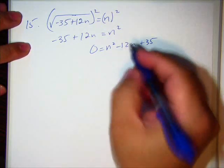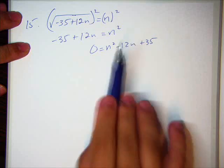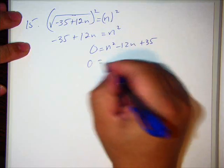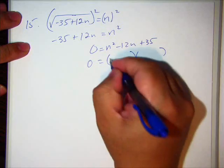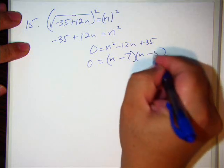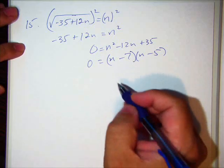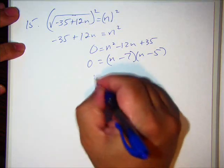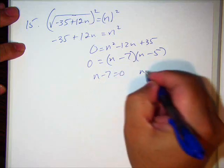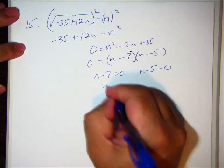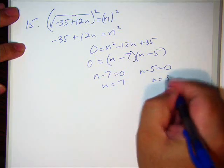What are the factors of that? What are the factors of 35 to combine to make -12? Well, how about 7 and 5? And these are kind of easy factoring problems. I wonder if they're going to get more interesting. I don't know. I need to quit babbling because I'm almost out of time. n - 7 = 0 and n - 5 = 0. n = 7 and n = 5. Check them out.